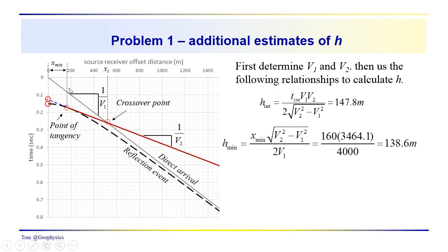If we use the minimum offset distance here, and I read that off as about 160 meters, we've already calculated the square root of V2 squared minus V1 squared. So, we have 160 times 3,464.1 divided by 2 times V1 or 4,000, and I got a value of 138.6. So, you can see these two numbers are not equal.